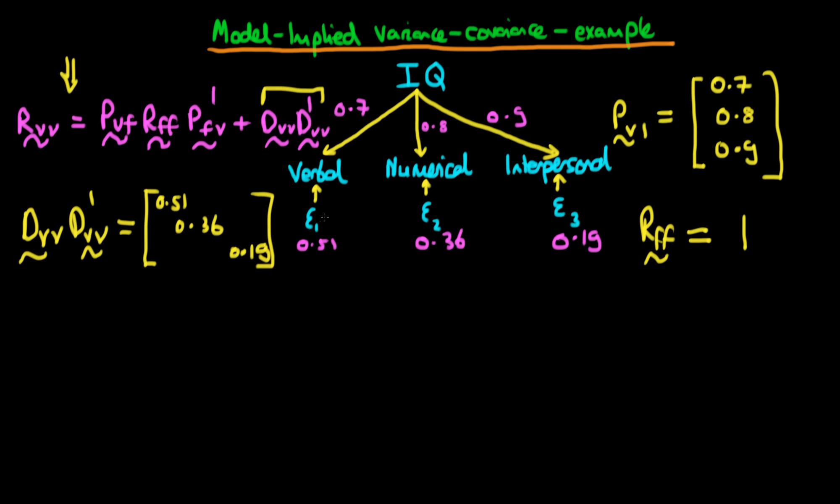And the off-diagonal elements represent any covariances between the errors. And since there are no covariances, which I've indicated here, then all the off-diagonal elements are going to be equal to 0.